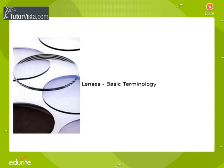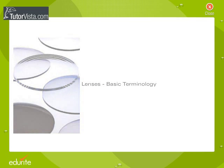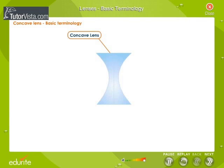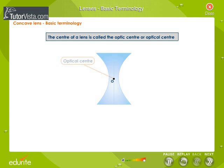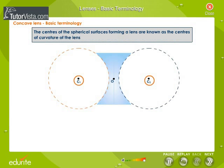Concave Lens Basic Terminology. The centre of a lens is called the optic centre or optical centre. The centres of the spherical surfaces forming a lens are known as the centres of curvature of the lens.